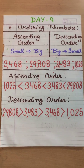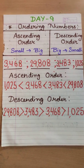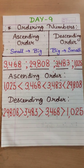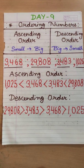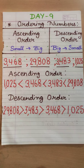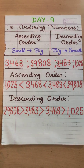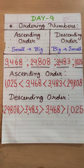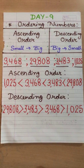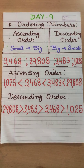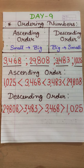So here our questions are given. Four numbers are given and we have to arrange them in both orders, ascending as well as descending. The numbers are 3,468; 29,808; 3,483; and 1,025. So let's compare the numbers and arrange them in ascending as well as descending order.